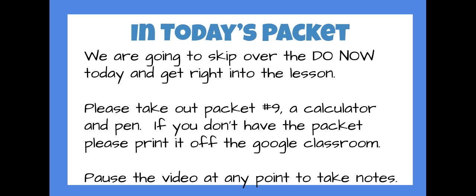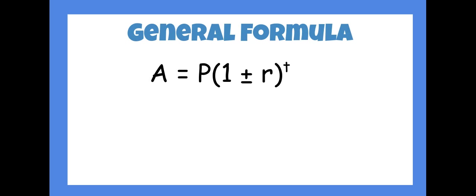On page 2, let's look at the general formula: A = P(1 ± r)^t. That plus and minus sign is a truncated way to combine two formulas into one. We use the plus sign or addition sign if a problem deals with something growing or getting bigger or increasing.